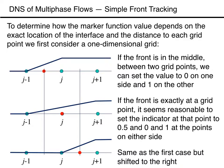Similarly, if the front is located exactly at grid point j, then we set the value there equal to half, and the value at j-1 to 0 and at j+1 to 1. If the front is moved further to the right, then eventually it is halfway between j and j+1, and we treat it exactly the same as in the first case, except shifted one grid point to the right.